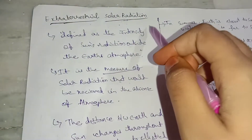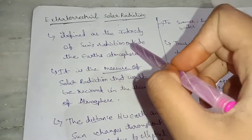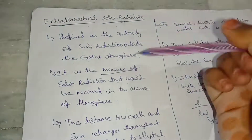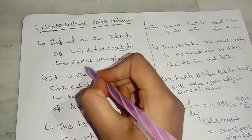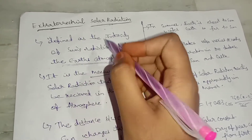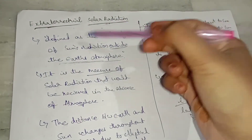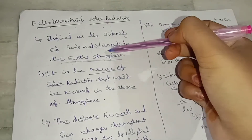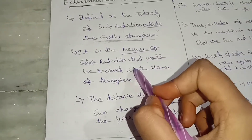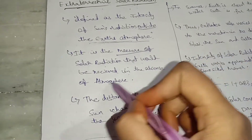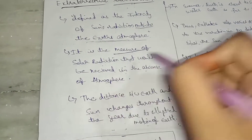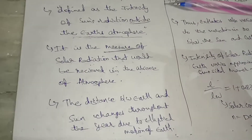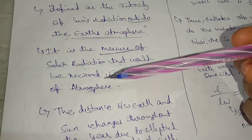Extraterrestrial solar radiation is nothing but the intensity of the sun's radiation outside the earth's atmosphere. It is defined as the intensity of sun's radiation outside the earth's atmosphere. It is a measure of solar radiation that would be received in the absence of atmosphere.